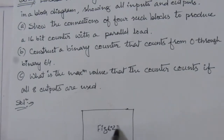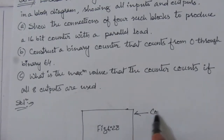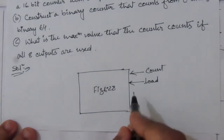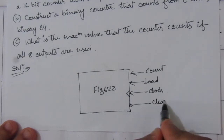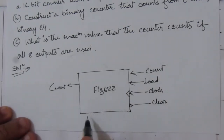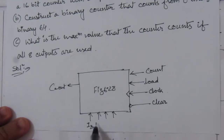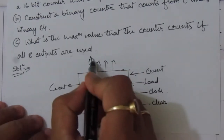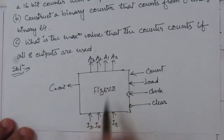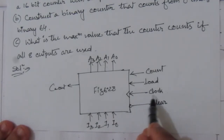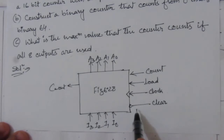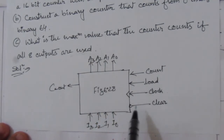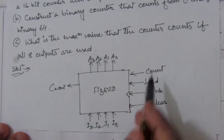Now we enclose figure 6.28 in a block diagram and define all inputs and outputs. The inputs are: count, load, clock, and clear. The outputs include cout. We have four inputs I3, I2, I1, I0, and four outputs A3, A2, A1, A0. At the rising edge of the clock all the JK flip-flops are activated. When we have an active-low input at the clear input, all four outputs are reset to zero. So we have drawn this block diagram with all inputs and outputs indicated.